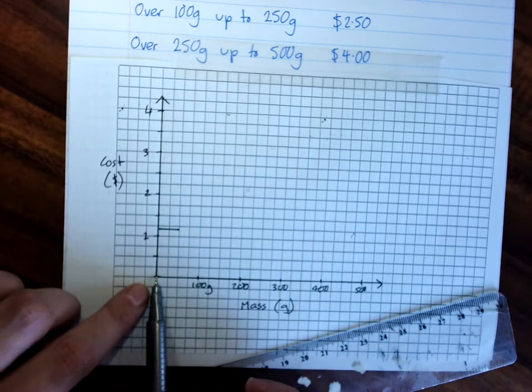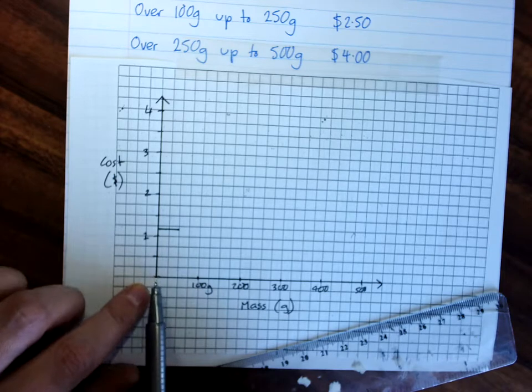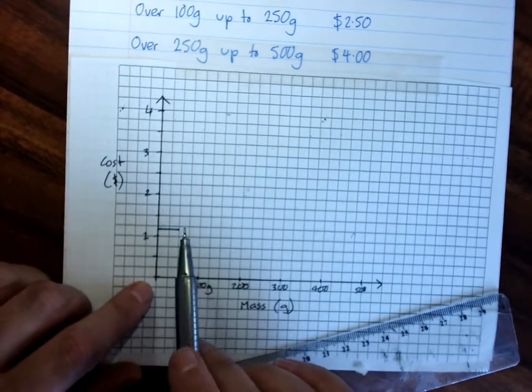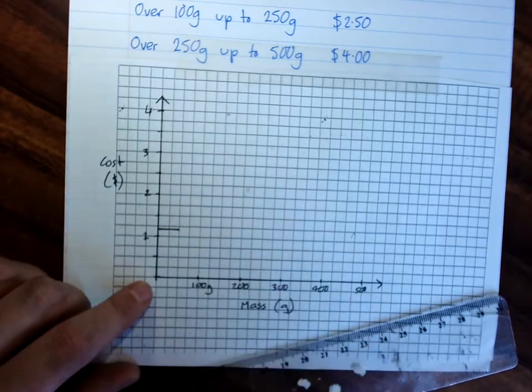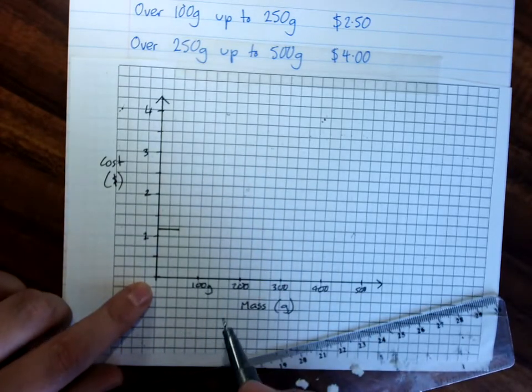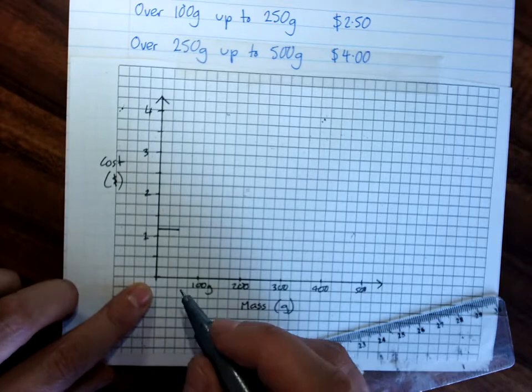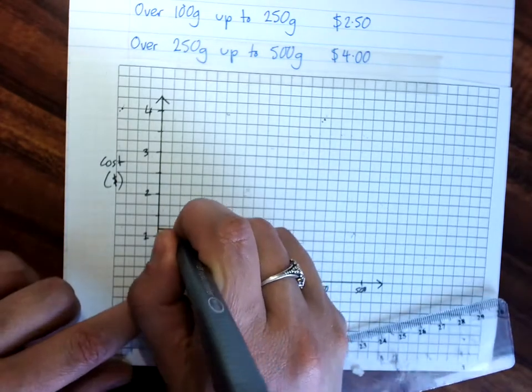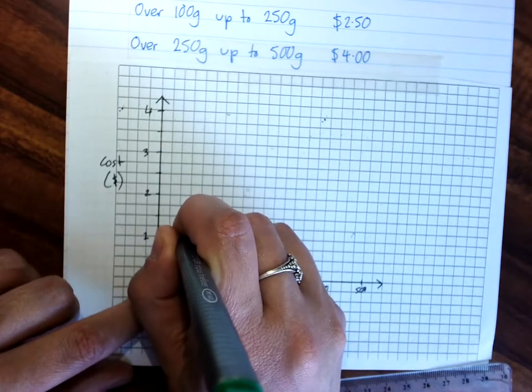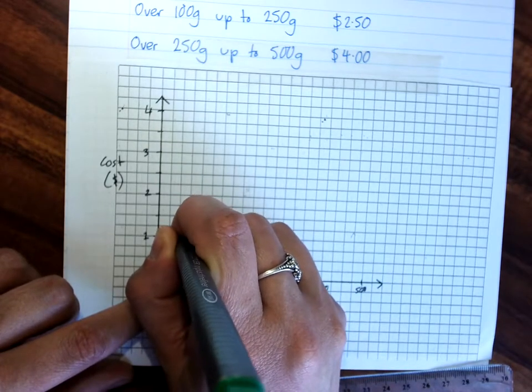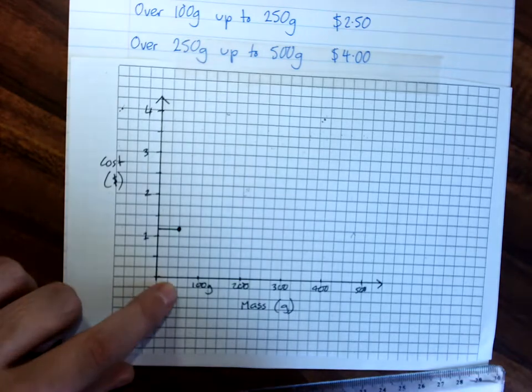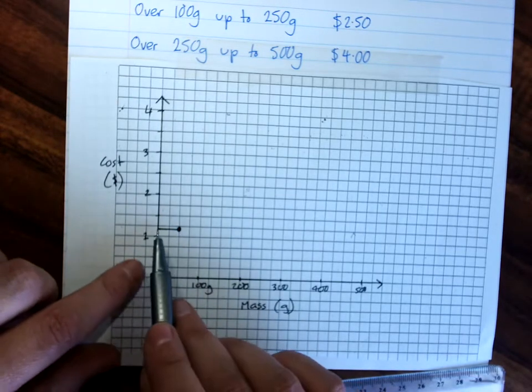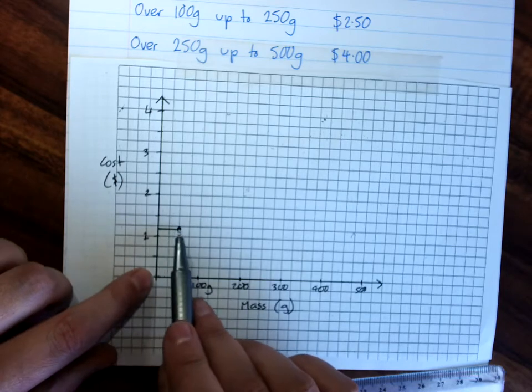But, what we need to indicate is a circle at both ends to show does a value right here get included here or in the next step. The end points are open circles if the mass is not included, and closed circles if that mass is included, or the x value, it's mass in this case. So, I'm going to do a closed circle there to say that 50 grams is included in this $1.20 step.